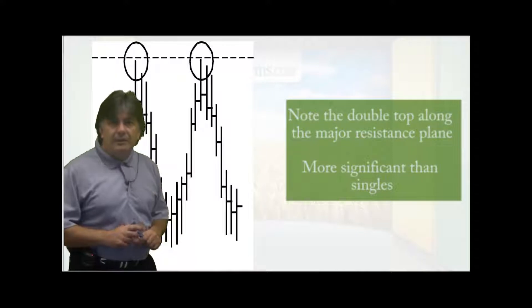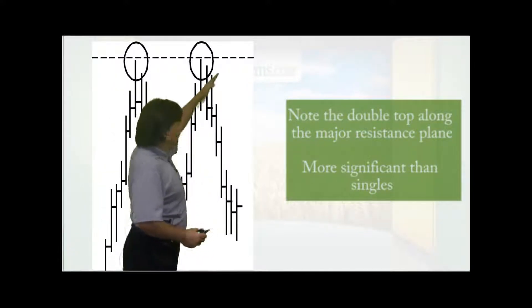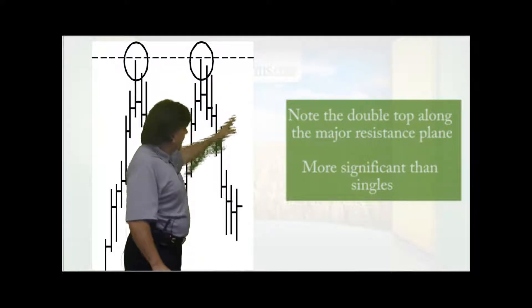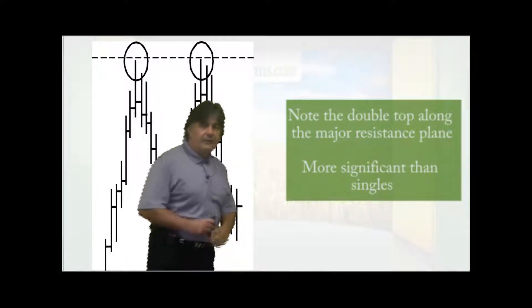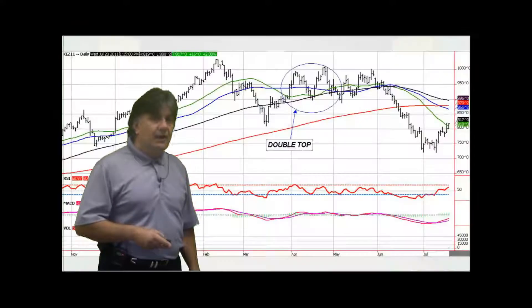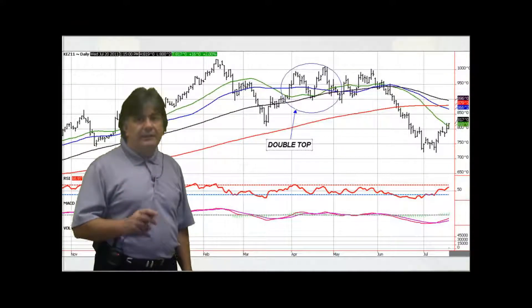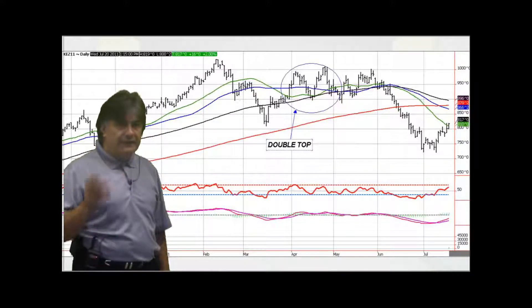Now let's talk about double tops and bottoms. Here's an example of a double top where the market is trending up, hits a temporary top, comes back down, retests that top, and then comes back down again. Sometimes when you see double tops, we've seen it in the past, these are common. That could be the end to the uptrend. These are more significant than a single top.